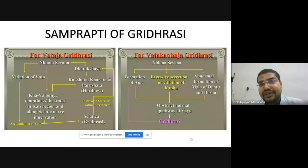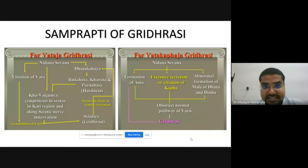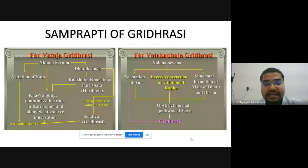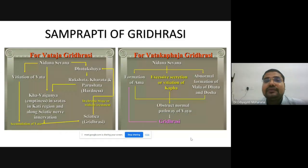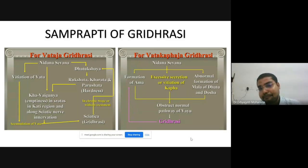Another classification is Swatantra Gridhrasi and Paratantra Gridhrasi. Swatantra Gridhrasi corresponds to the classical Vataja and Vata-Kaphaja types. Paratantra Gridhrasi occurs due to an underlying disease — such as Ama Vata, Sandhigata Vata, a cyst or tumor, intervertebral disc prolapse, or nerve compression. In Vataja Gridhrasi, the main Samprapti is Dhatukshaya, whereas in Vata-Kaphaja Gridhrasi, there is Anubandha of Kapha Dosha with additional Kapha symptoms like Tandra, Arochaka, Gaurava, and excessive salivation.